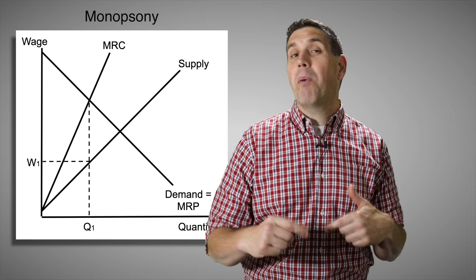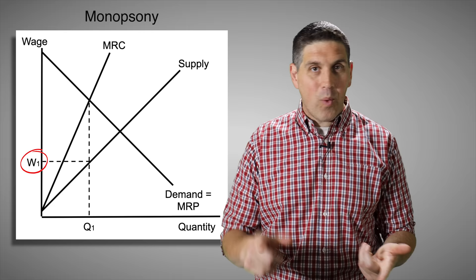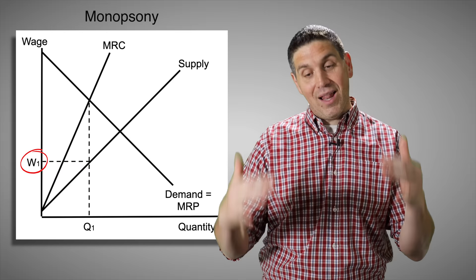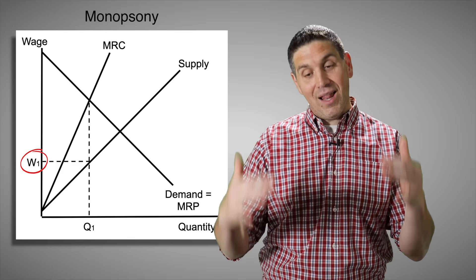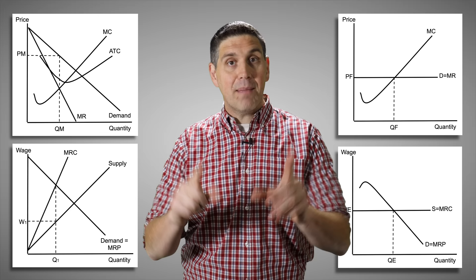But what if there's an imperfect labor market? That's a different graph called a monopsony, where there's only one firm hiring. The supply of labor is upward sloping with an upward sloping marginal resource cost. You hire where MRP equals MRC, and you'll notice the wage is below the equilibrium wage that would exist under perfect competition. These are firms that hire workers at a lower wage because the workers aren't going anywhere — think of it like a monopoly for labor. If you take the monopoly graph from unit four and flip it, you get the monopsony graph.